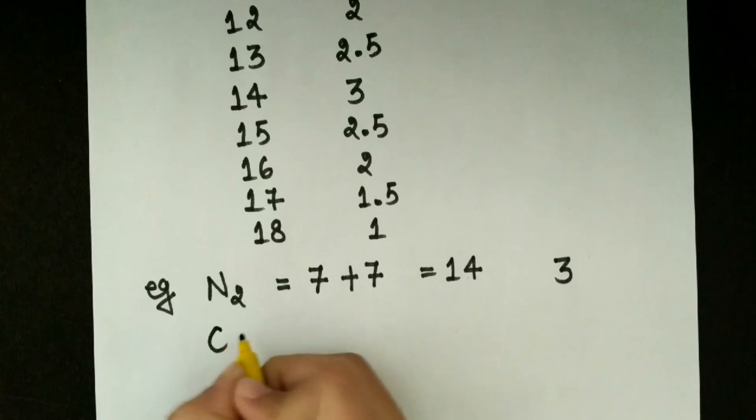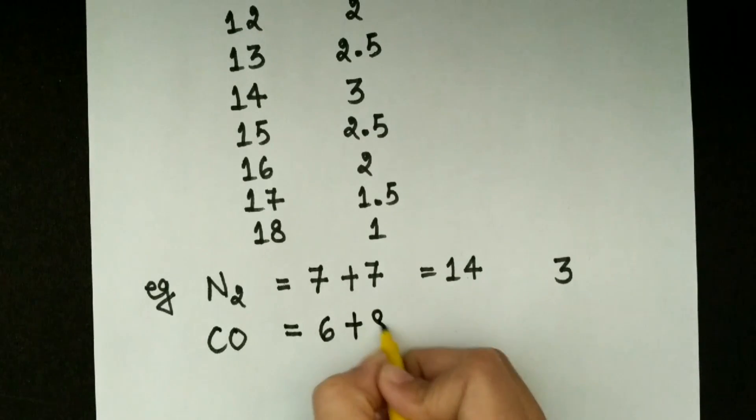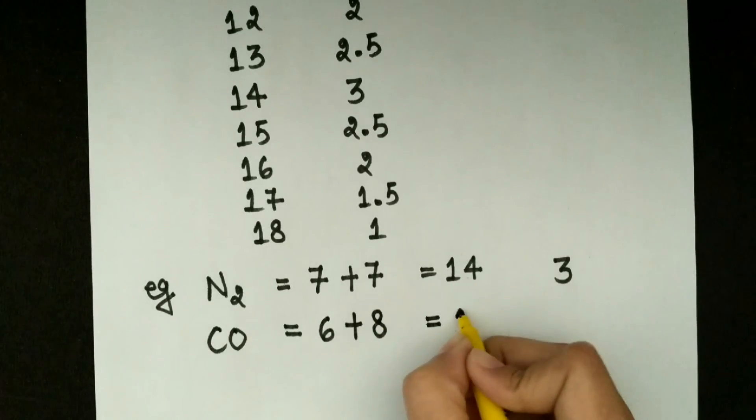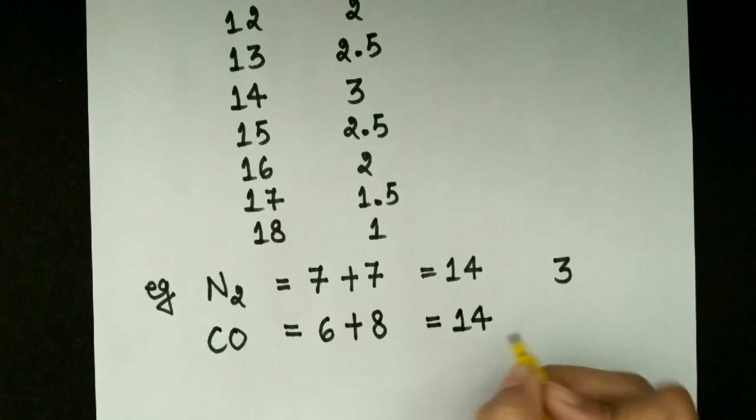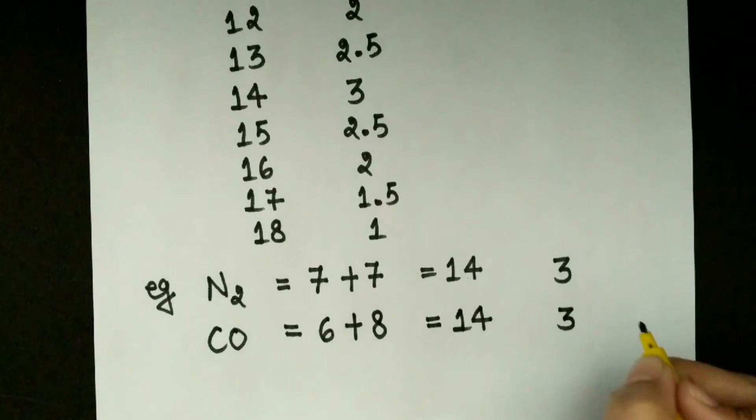again take an example for CO. As we know carbon has 6 electrons and oxygen has 8 electrons. So its sum is 14. So again we have bond order is 3.